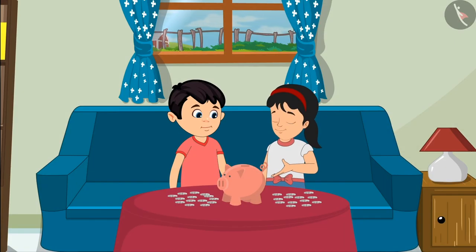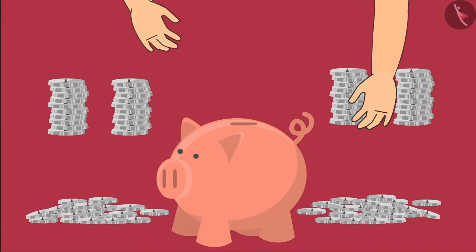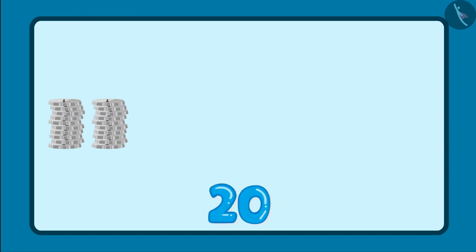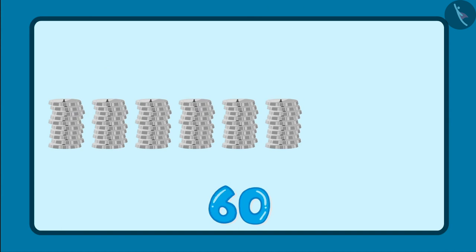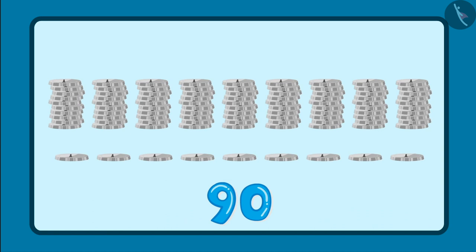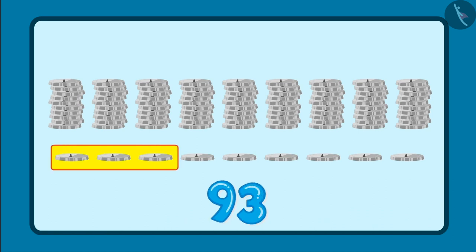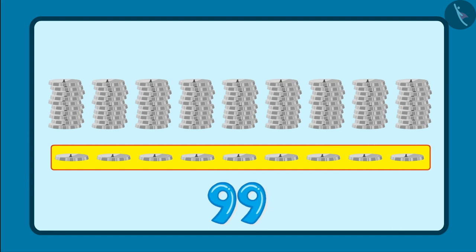Let's count all these coins by making groups of 10 each. So these are 10, 20, 30, 40, 50, 60, 70, 80, and 90. And along with that, there are 91, 92, 93, 94, 95, 96, 97, 98, and 99.